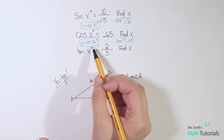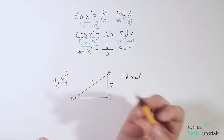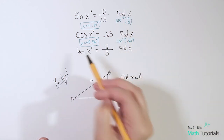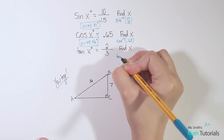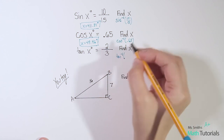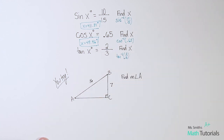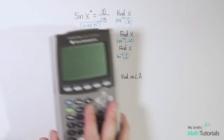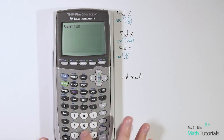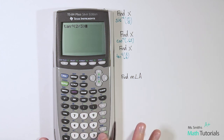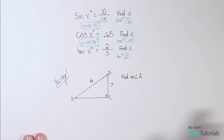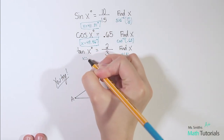Let's do one more: tan of x degrees equals 2 over 3. It works the exact same way — instead of sine or cosine, we write tan. So tan to the negative one of (2 over 3). On the calculator, hit second tan, enter 2 divided by 3, close it out, and we get 33.69. So x equals 33.69 degrees.